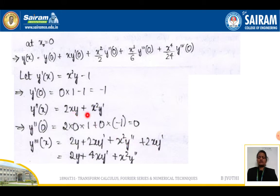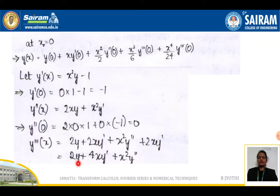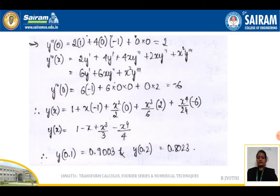Next, y'''(x) = 2y + 2xy' + x²y'' + 2xy'. Here the second and fourth terms are the same, so 2xy' + 2xy' = 4xy', giving y'''(x) = 2y + 4xy' + x²y''. Substituting x = 0 into y'''(0): the second and third terms become 0, leaving 2·y = 2·1 = 2. Therefore y'''(0) = 2.